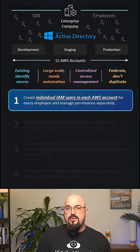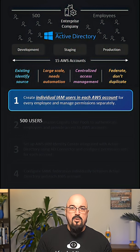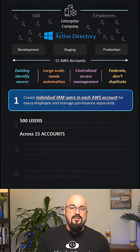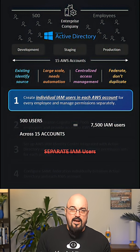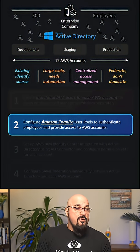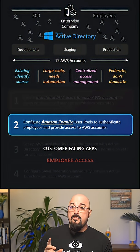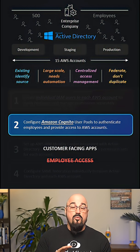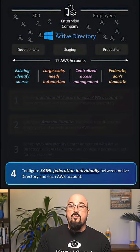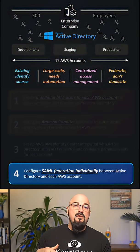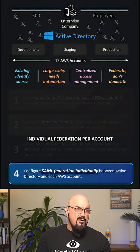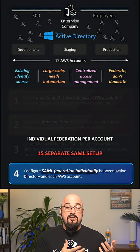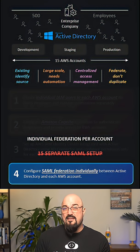The hint says no individual IAM users, so option one is immediately out — creating 500 users across 15 accounts equals 7,500 IAM users, which directly violates the no separate IAM users requirement. Option two: Cognito is for customer-facing apps, not for employees to access AWS accounts — wrong service, wrong use case. Option four: individual federation per account works, but configuring 15 separate SAML setups per AWS account is complex and not scalable.